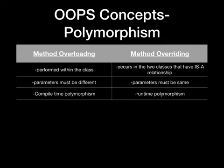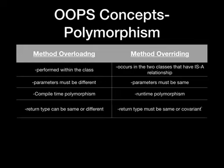In overloading, it can have the same or different return type, whereas the return type must be the same or covariant in overriding.